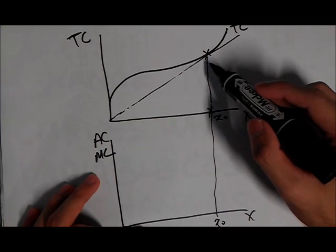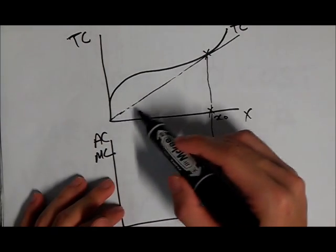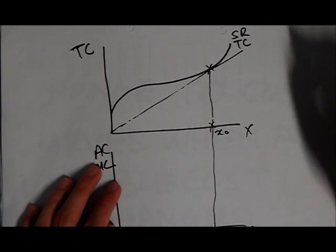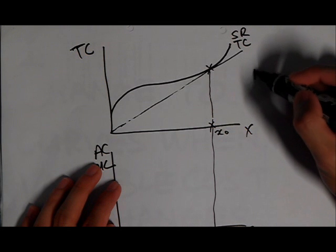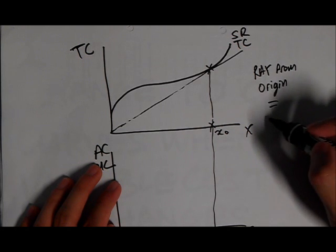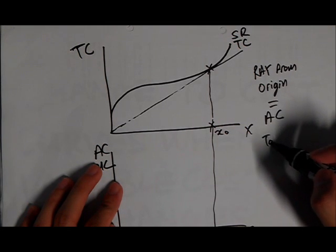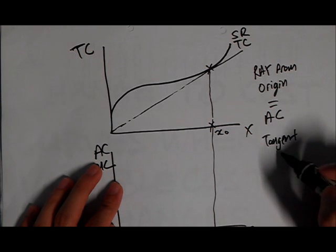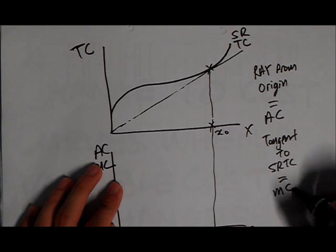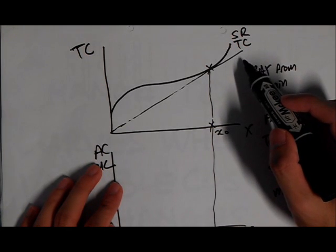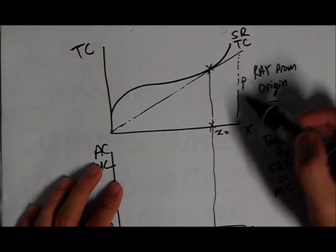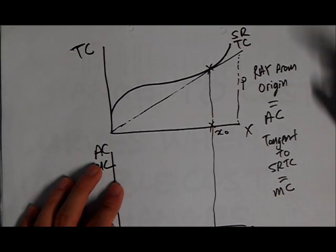Okay, at this point, that's where the gradient of a ray from the origin to the curve is the lowest. And this would give us the lowest average cost. Ray from origin gives us the average cost. A tangent to the cost curve, to the short run total cost, will give us our marginal cost. If you find out the gradient, it's basically your total price divided by your total quantity, so that gives us our average cost.